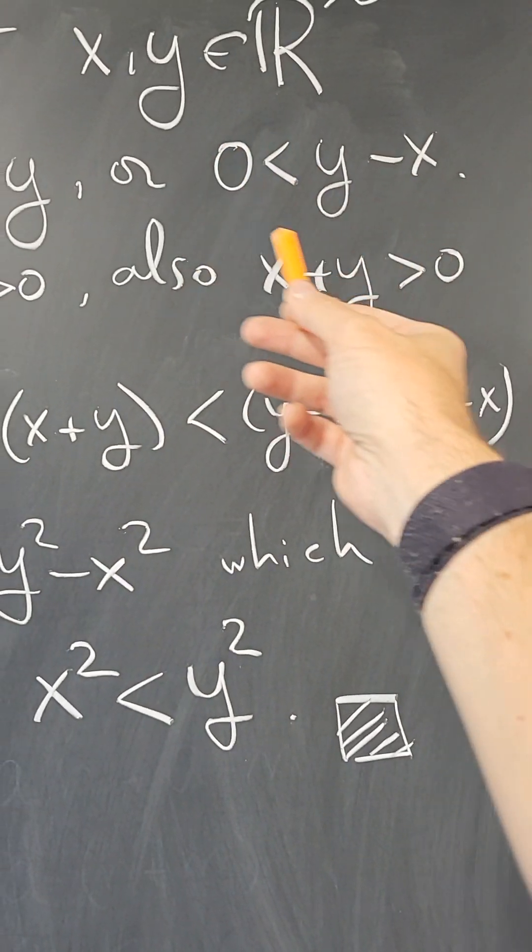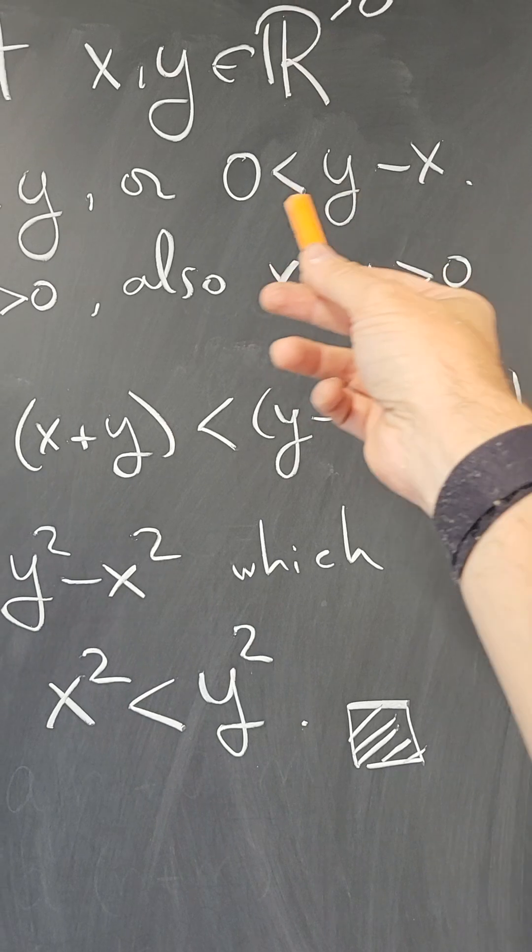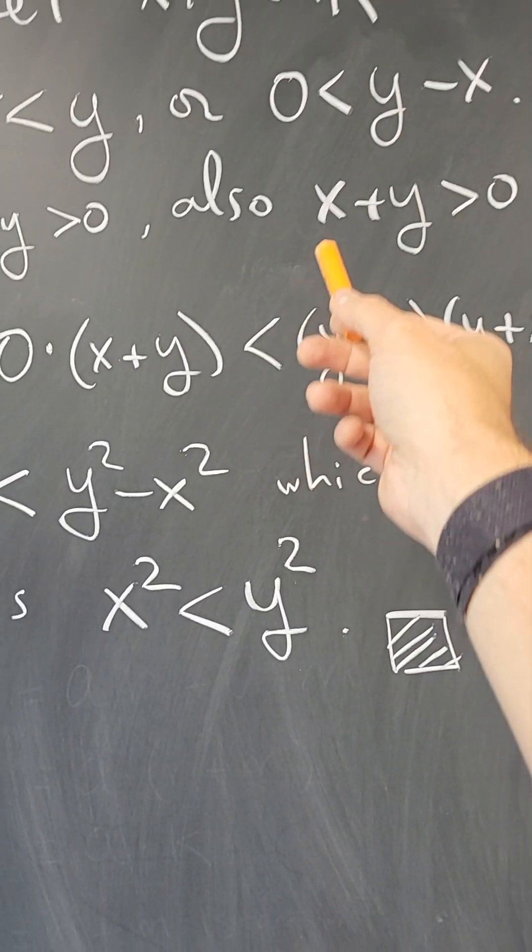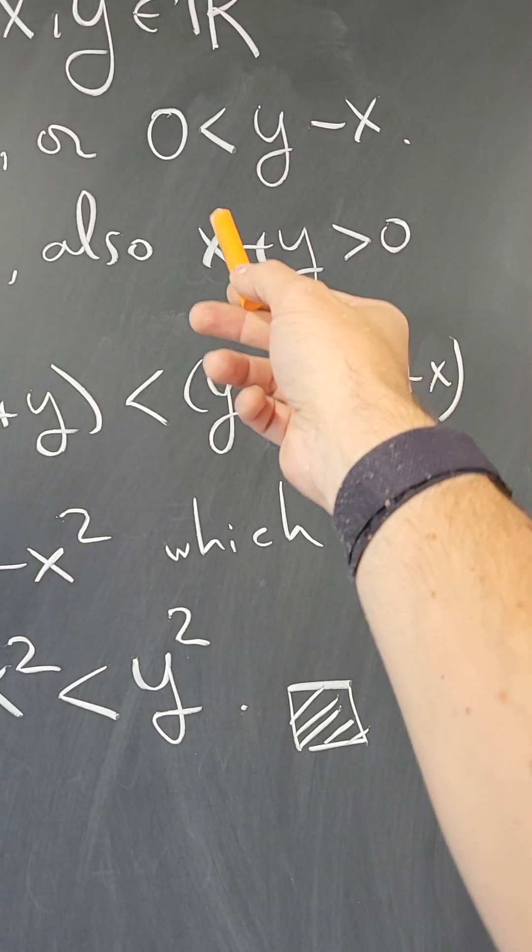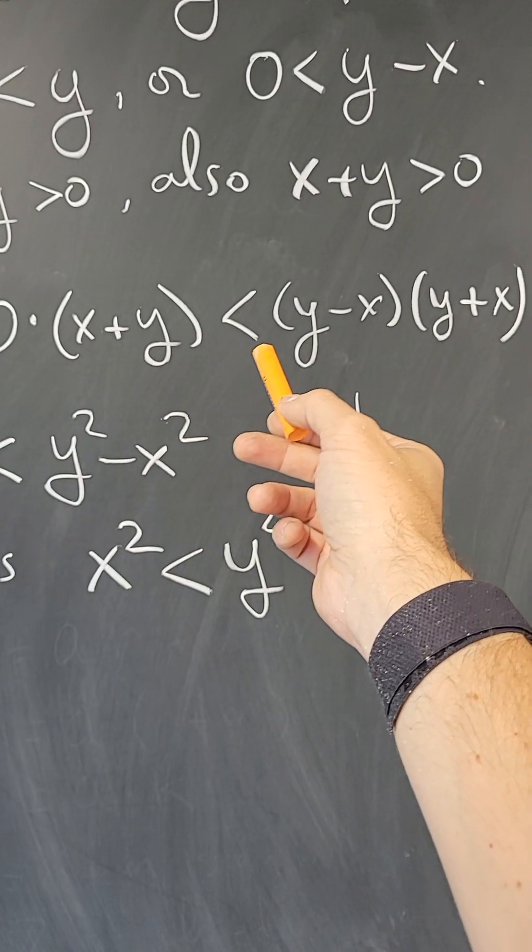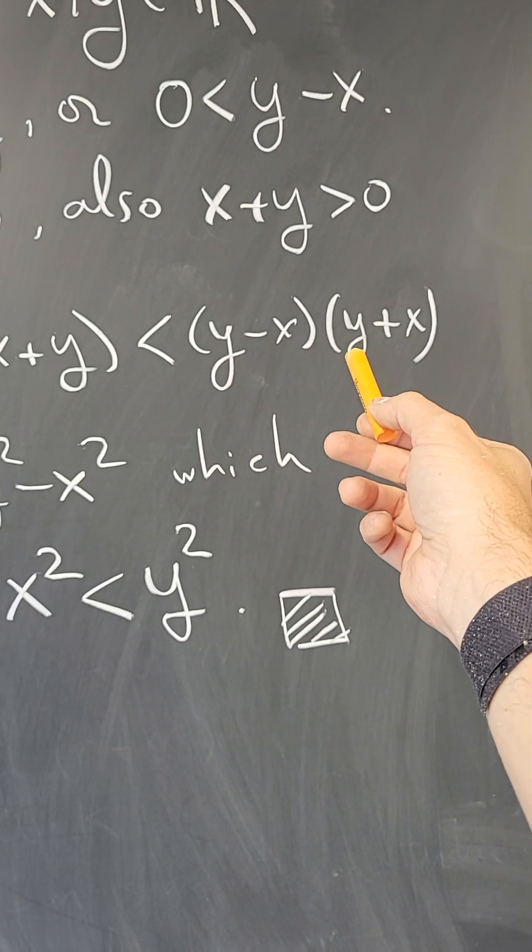Then we can multiply this inequality by a positive real number and get another inequality in the same direction, so I'm going to multiply both sides by x plus y, which is positive, to get that zero times (x + y) is less than (y - x) times (y + x).